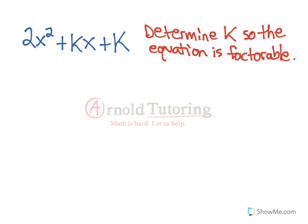Okay, so let's think about factorable. Generally we look at, we need two numbers, right? And our two numbers need to multiply to what we usually say is a times c, so that's the first coefficient times the last constant. So in this case that's 2 times k, so our two numbers need to multiply to 2k, and they need to add to the middle number, which is just k.